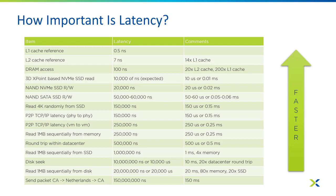This chart depicts latency time and compares it across different situations. At the bottom of the chart we have things like sending packets between California and the Netherlands, all the way up to the top where we're talking about latency for level one cache on actual CPUs. Looking at today's technology, today's hard drives, we're probably somewhere in the top half — NVMe drives, 3D XPoint drives, and then memory access itself.